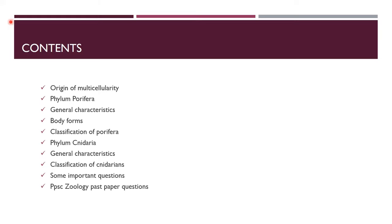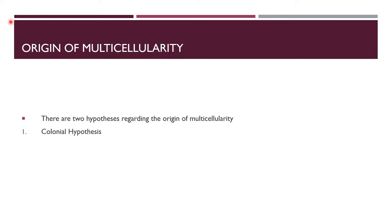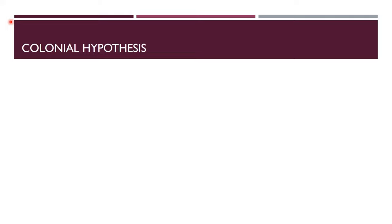This topic is very interesting and important, so prepare it carefully. First, we'll discuss the origin of multicellularity. There are two hypotheses: the colonial hypothesis and the syncytial hypothesis. According to the colonial hypothesis, multicellularity may have arisen when cells of dividing protists remained together.